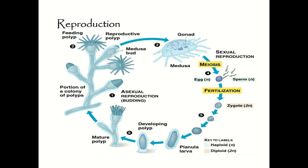In the sexual reproduction of cnidarians through budding, portions of the colony polyps give rise to medusae. The medusa produces gonads, which help the cnidarian undergo sexual reproduction through meiosis and fertilization. This produces a zygote that develops into a planula larva, which then develops into a young polyp, and the cycle repeats.